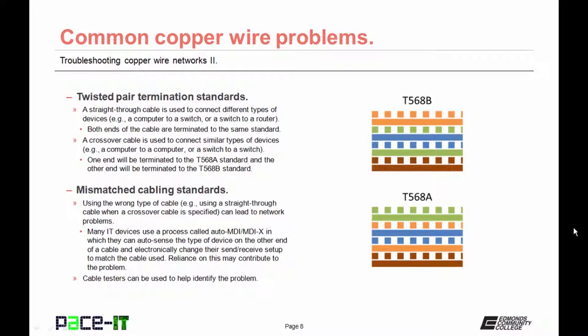We are going to begin with twisted pair termination standards. A straight-through cable is used to connect different types of devices, e.g. a computer to a switch or a switch to a router. Both ends of the cables are terminated to the same standard. Alternatively, there is a crossover cable. A crossover cable is used to connect similar types of devices, as in a computer to a computer or a switch to a switch. One end will be terminated to the T568A standard and the other end will be terminated to the T568B standard.